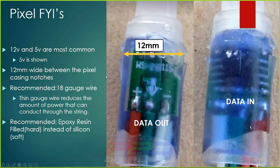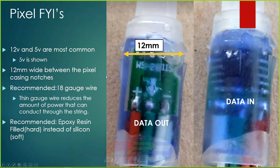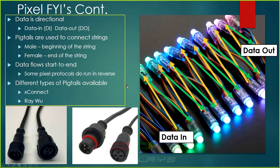Whenever you talk about data-in and data-out, sometimes instead of seeing an arrow you'll see a 'DI' or 'DO' on the pixel. You can't just look at a pixel and say 'this is the input, this is the output' — you want to look for the letters DI or DO, or look for the arrow, to signify where data comes in or goes out. That tells you where to start the string.